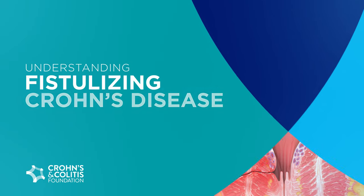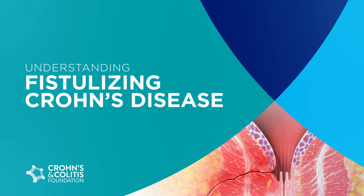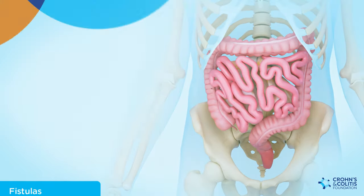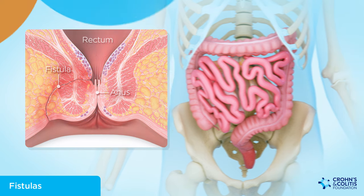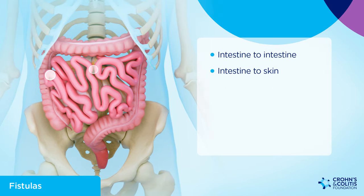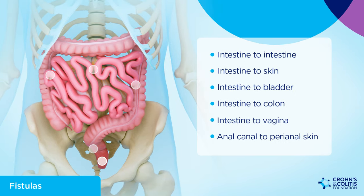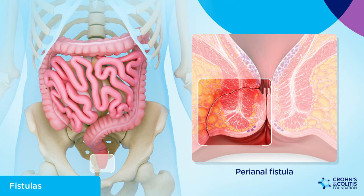Understanding fistulizing Crohn's disease. Fistulas are abnormal connections between the intestines and a nearby organ or skin that can form due to inflammation or infection. Fistulas can occur anywhere in the gastrointestinal tract, but perianal fistulas are the most common type in patients with Crohn's disease.